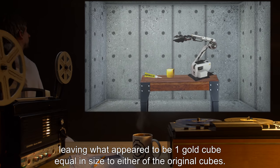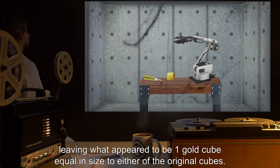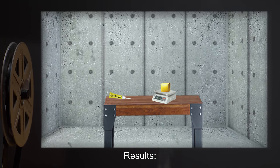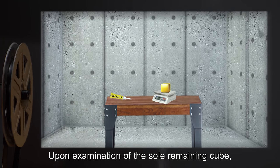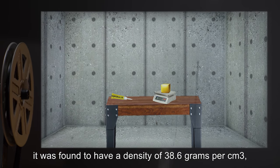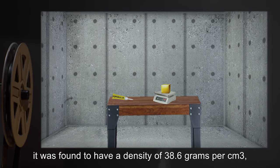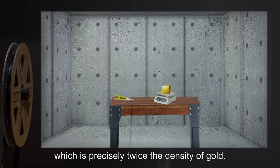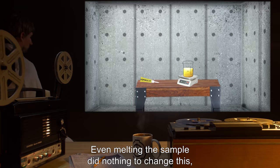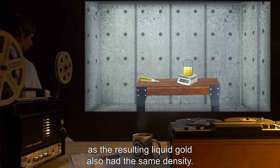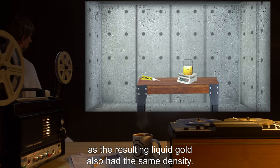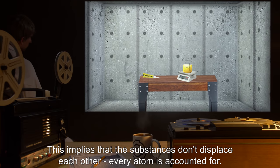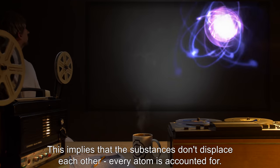Results: upon examination of the sole remaining cube, it was found to have a density of 38.6 grams per centimeter cubed, which is precisely twice the density of gold. Even melting the sample did nothing to change this, as the resulting liquid gold also had the same density. This implies that the substances don't displace each other—every atom is accounted for.